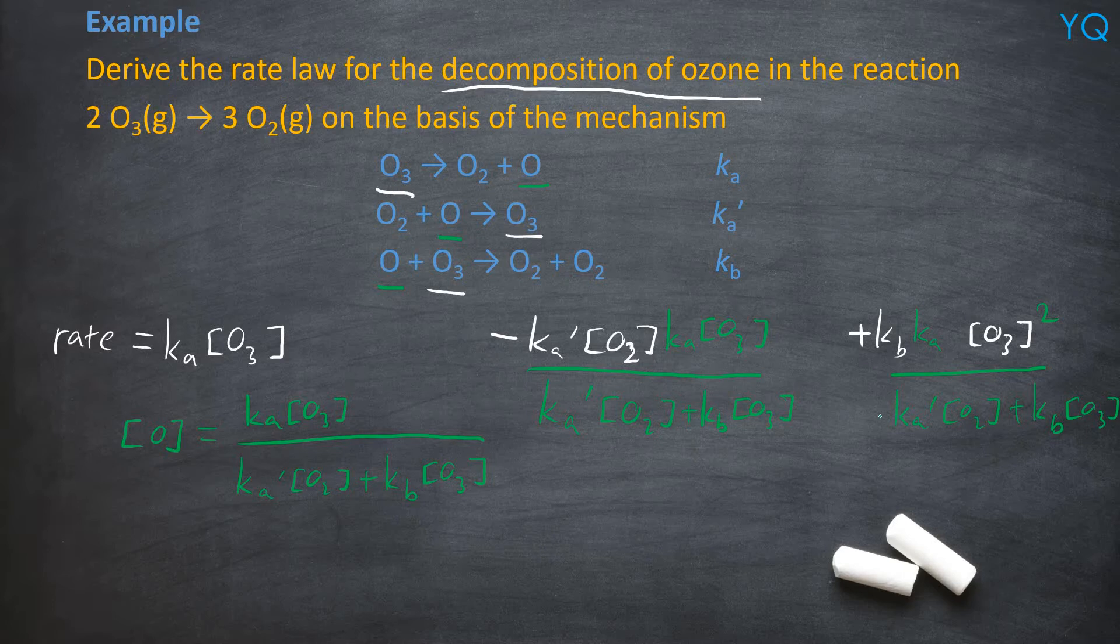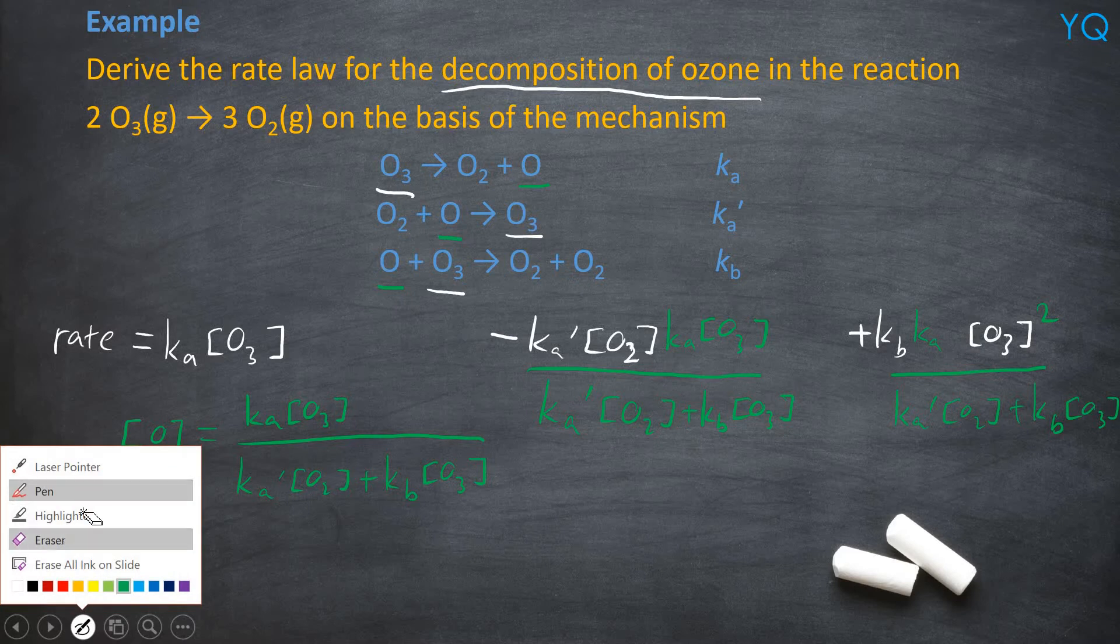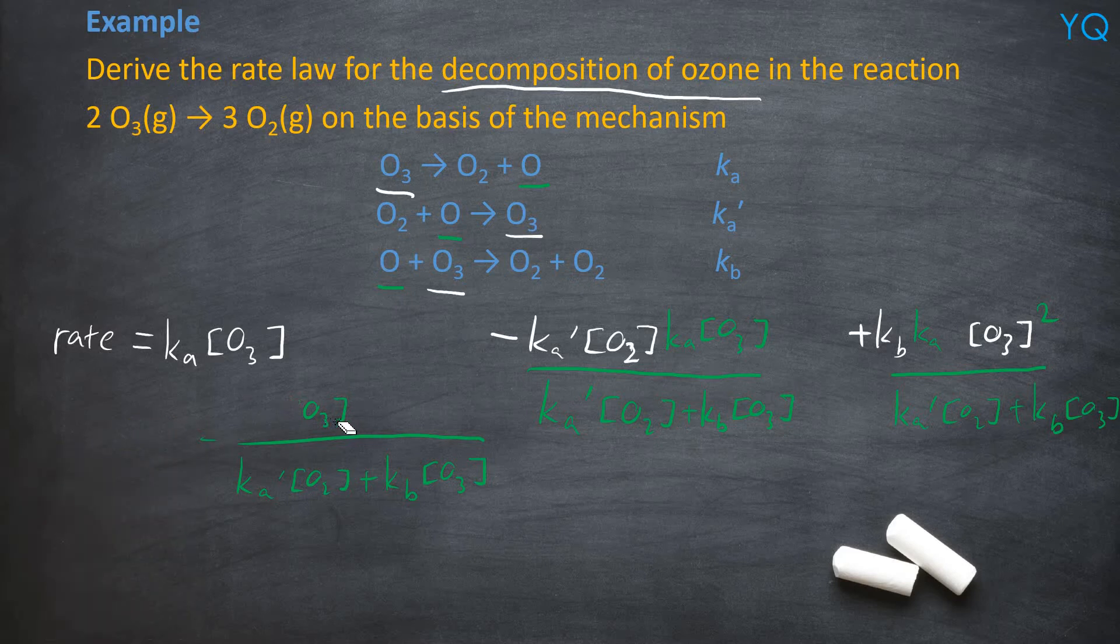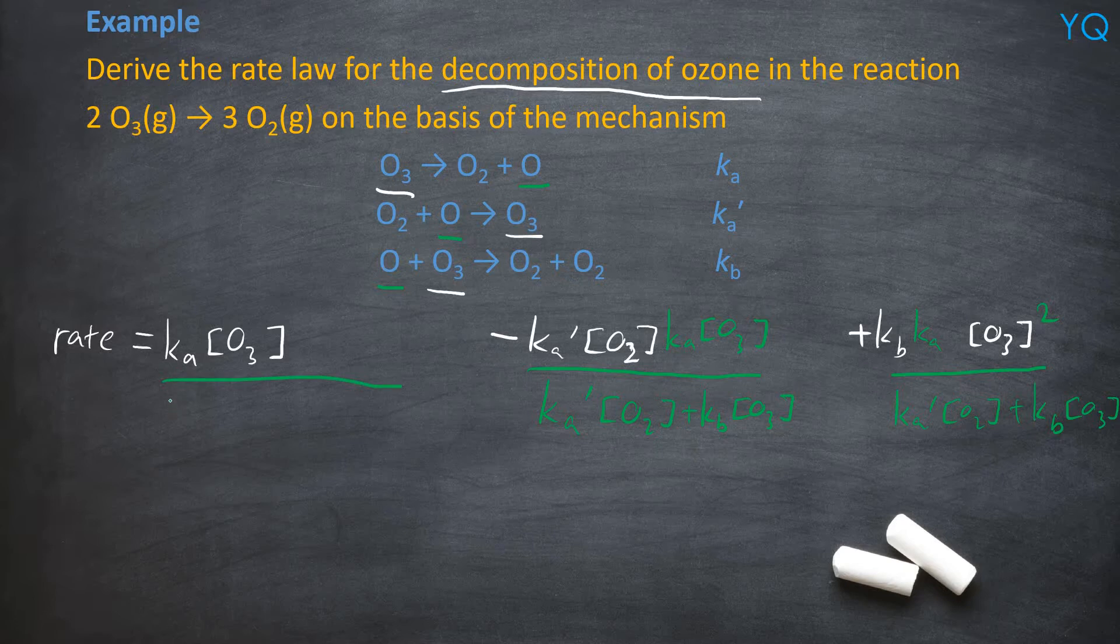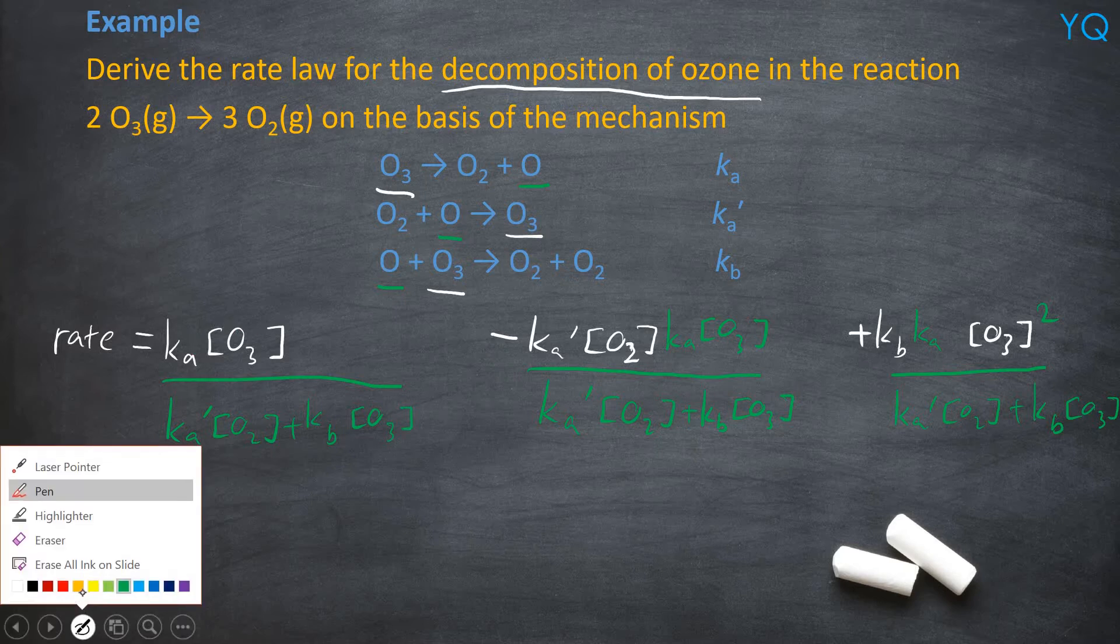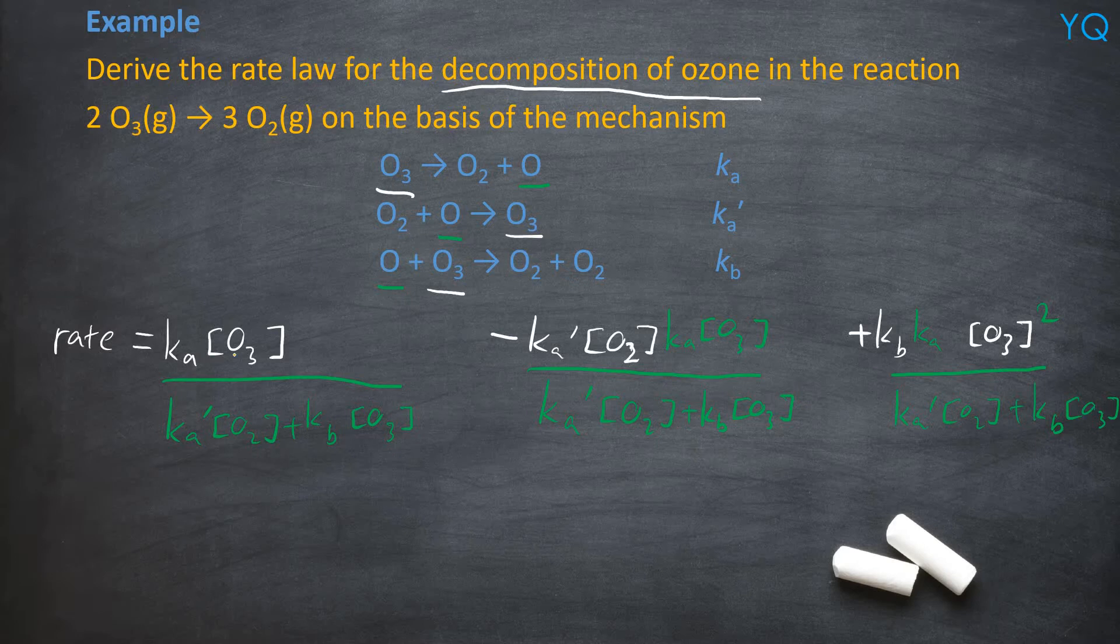Okay. Yup. Then to make everything nice, you try to make all the denominators the same. Right? And you can get a better looking equation. So to make everything the same, put the same denominator for this one. Ka prime O2 plus Kb O3. So it will be Ka times... I'm going to change a different color. Ka O3 times Ka prime O2.